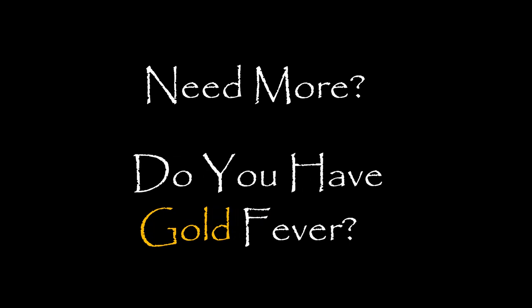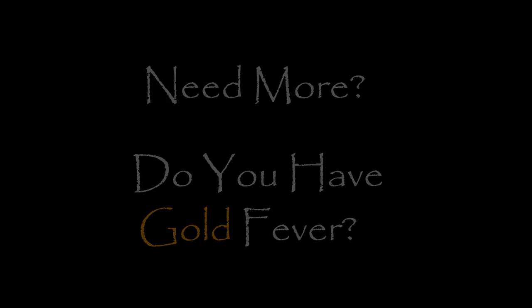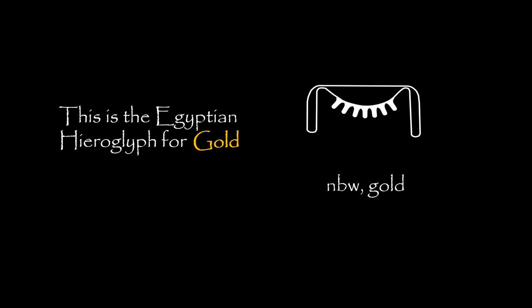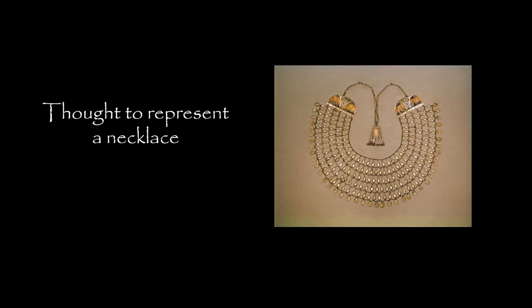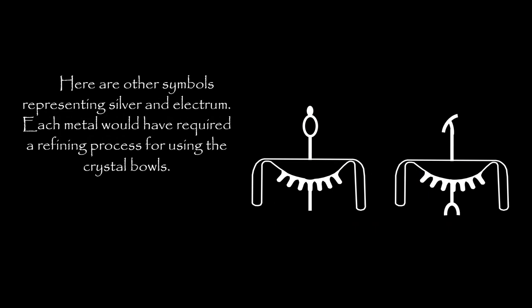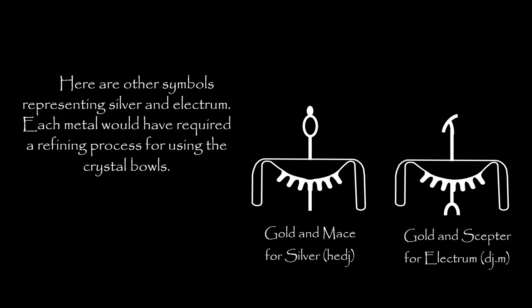This is the Egyptian hieroglyph for gold, thought to represent a necklace. Here are other symbols representing silver and electrum. Each metal would have required a refining process, for which the alabaster bowls may have been used.